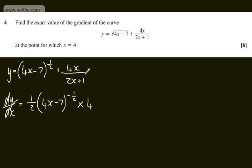We now have a quotient and I'm going to use the quotient rule. So we'll let u be equal to 4x, du dx is going to be 4, v is going to be 2x plus 1, and dv dx is going to be 2.